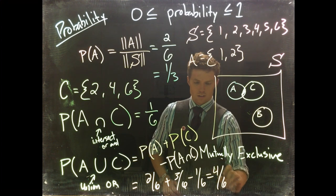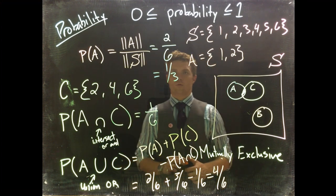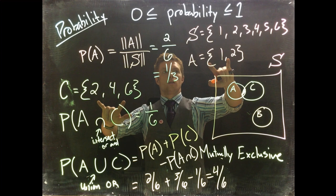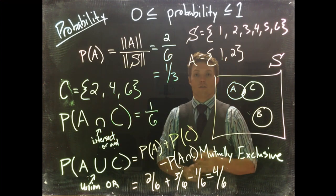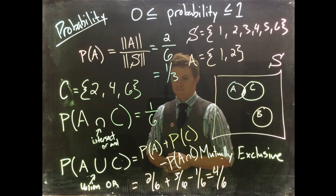This gives us a total of 4/6. We can double check this: from our two events we would count all unique outcomes, so we'd have 1, 2, 4, and 6. We have four unique outcomes.